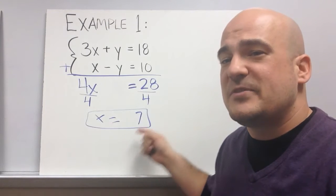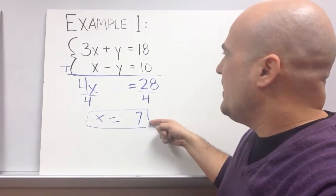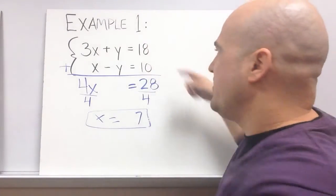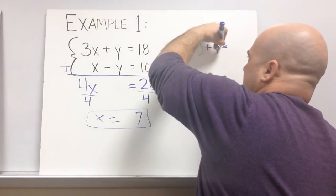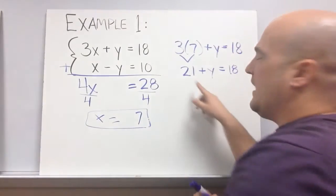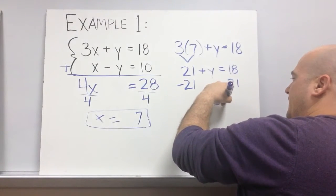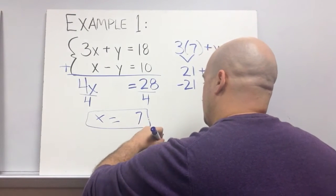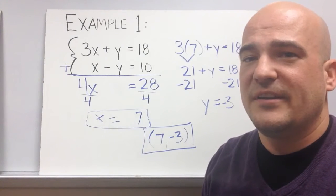There's half of my answer. Now I'm on to step number four — I need to substitute this value back into one of these equations and solve for y. I'm going to plug it back into the top equation, but you could choose either equation. So 3 times 7 plus y equals 18. 3 times 7 is 21. I subtract 21 from both sides and I get y equals negative 3. So x is 7 and y is negative 3. The solution to this system is (7, negative 3), and we solved that using elimination.